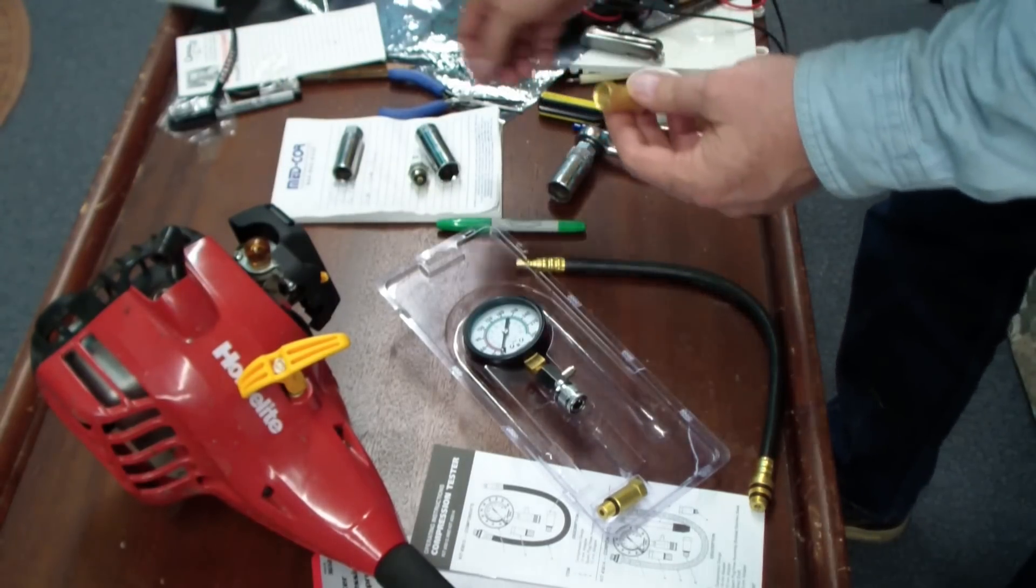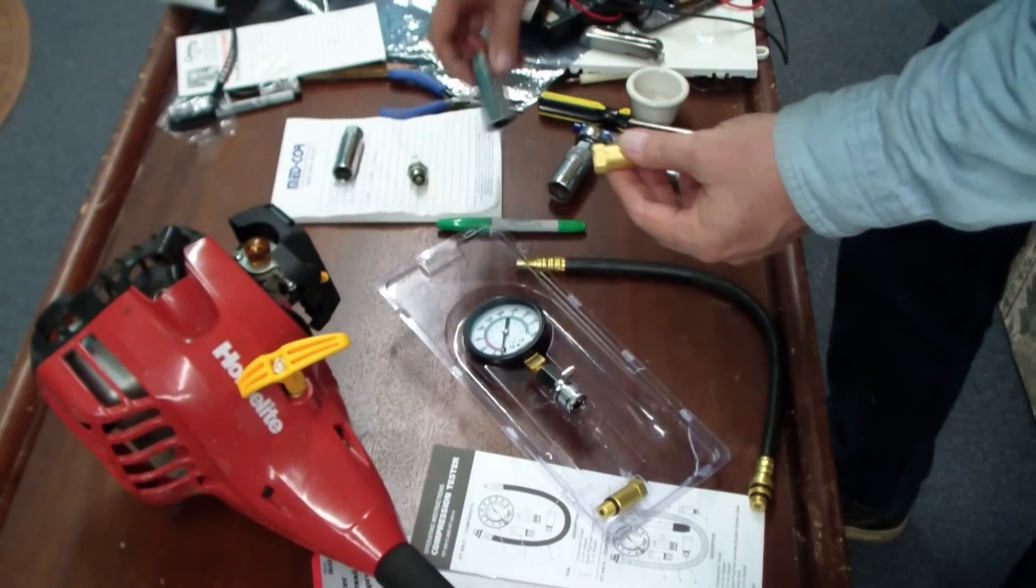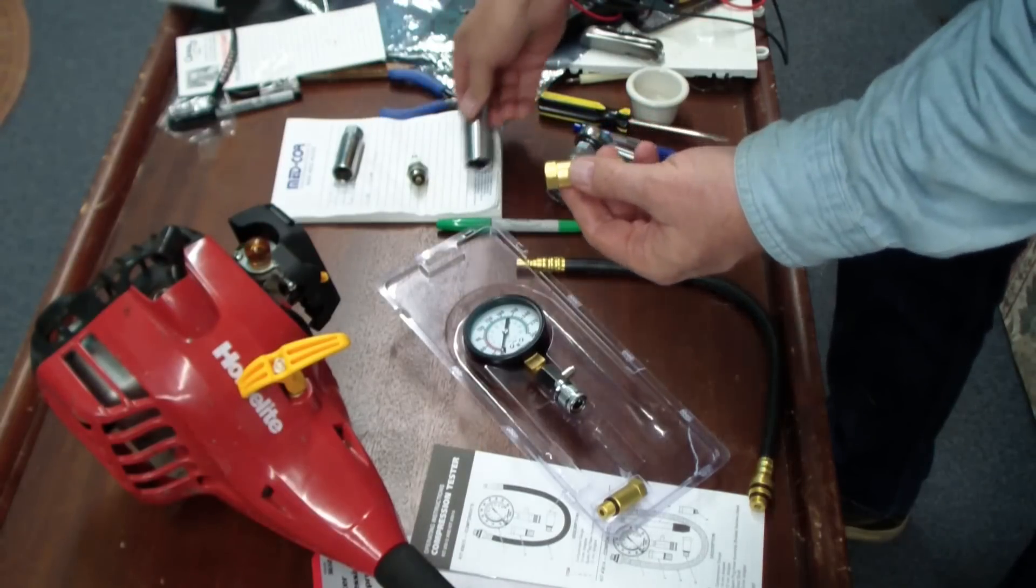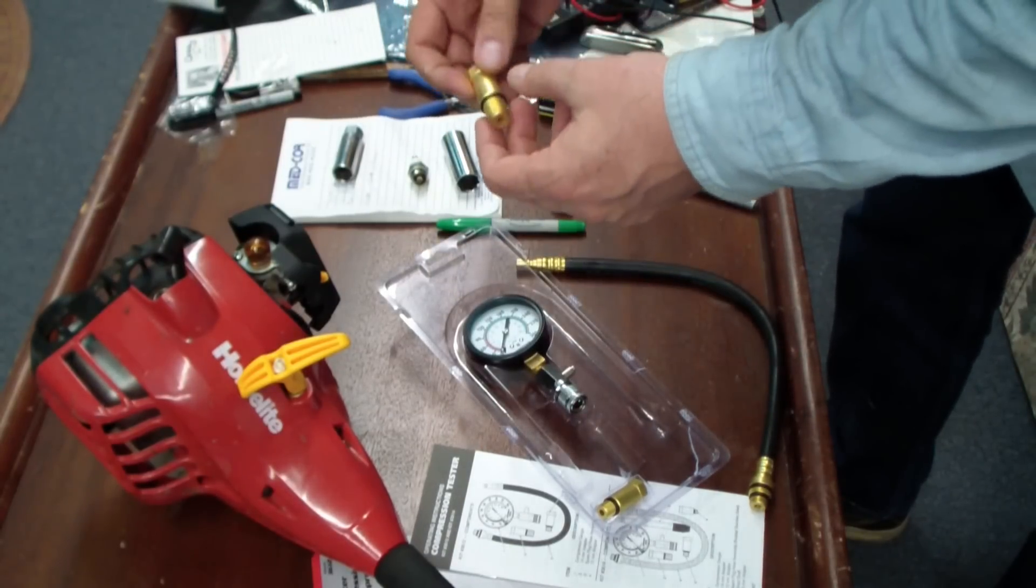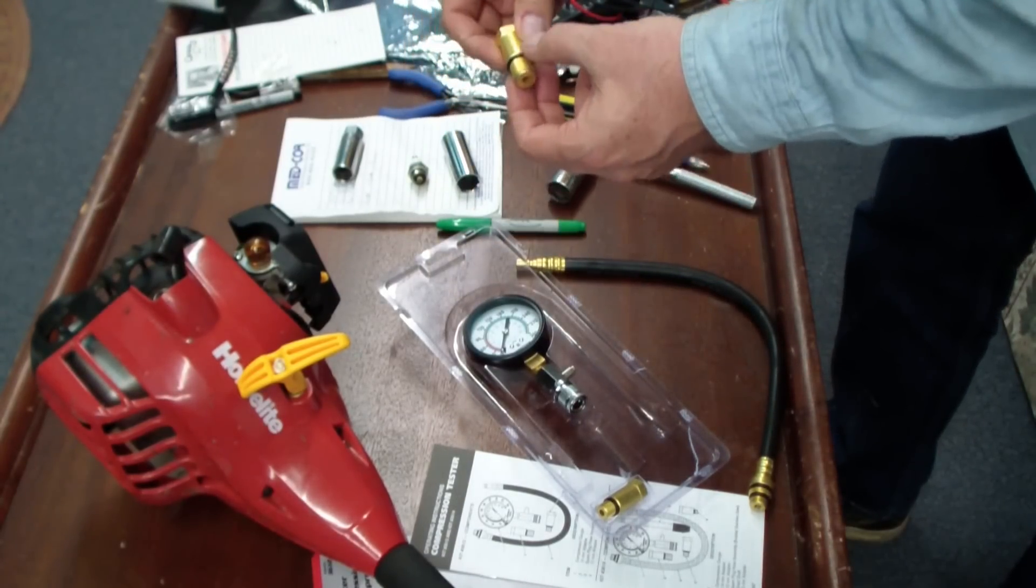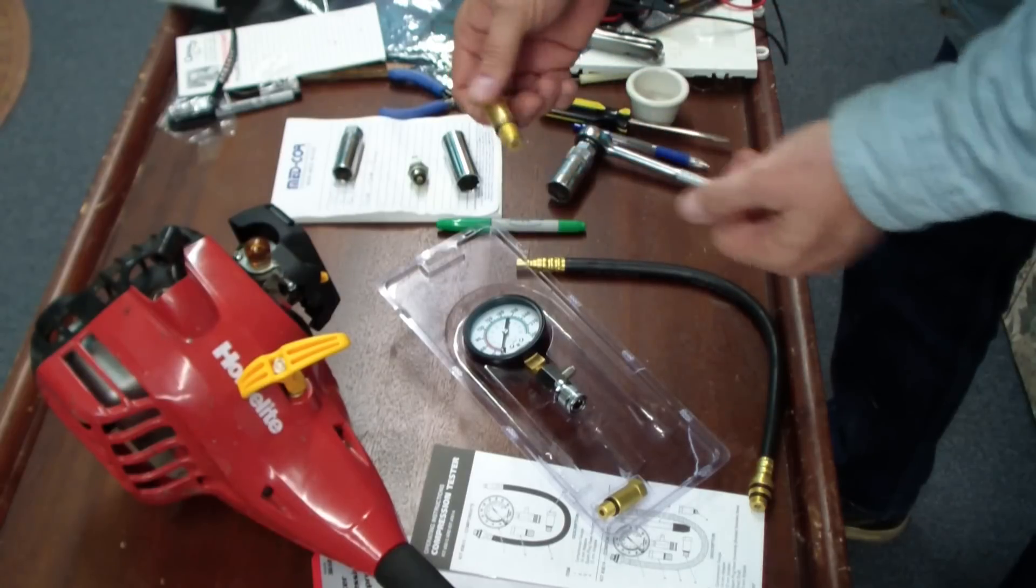But if you wanted to use this thing, you would take a five-eighths inch socket, and then just tighten it down with a five-eighths inch socket. But you don't crank these things down. You're just going to tighten it up to where the rubber O-ring seats. That's all you need.